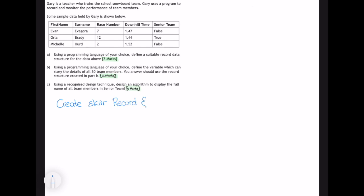Now the information that we hold on each skier is their first name, surname, race number, downhill time and senior team. For each value, I need to specify the data type of that value. First name is going to be a string, surname is also going to be a string, race number is going to be an integer, downhill time is going to be a real, and senior team is going to be a boolean.